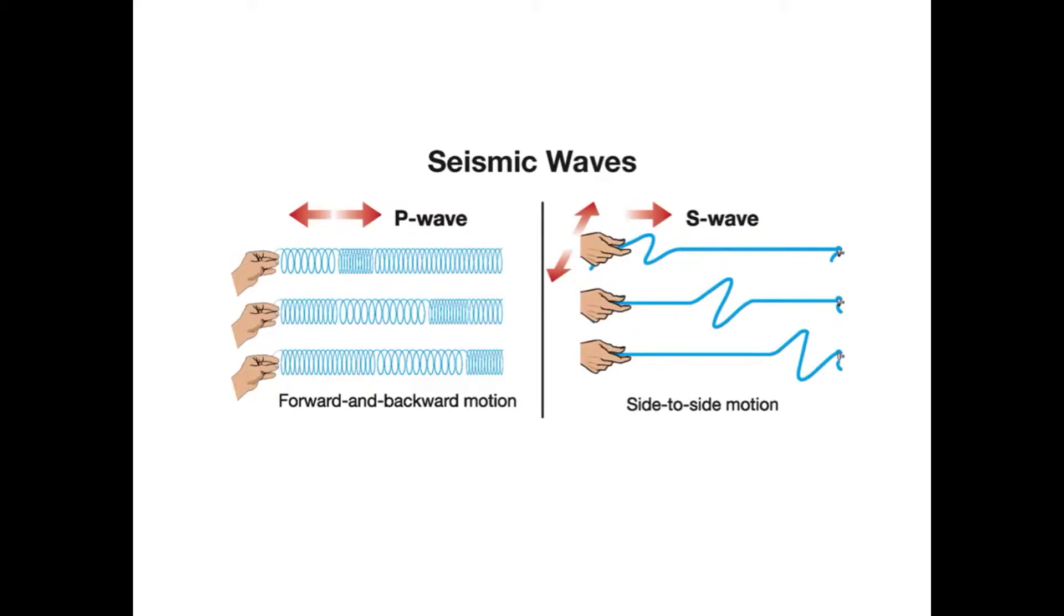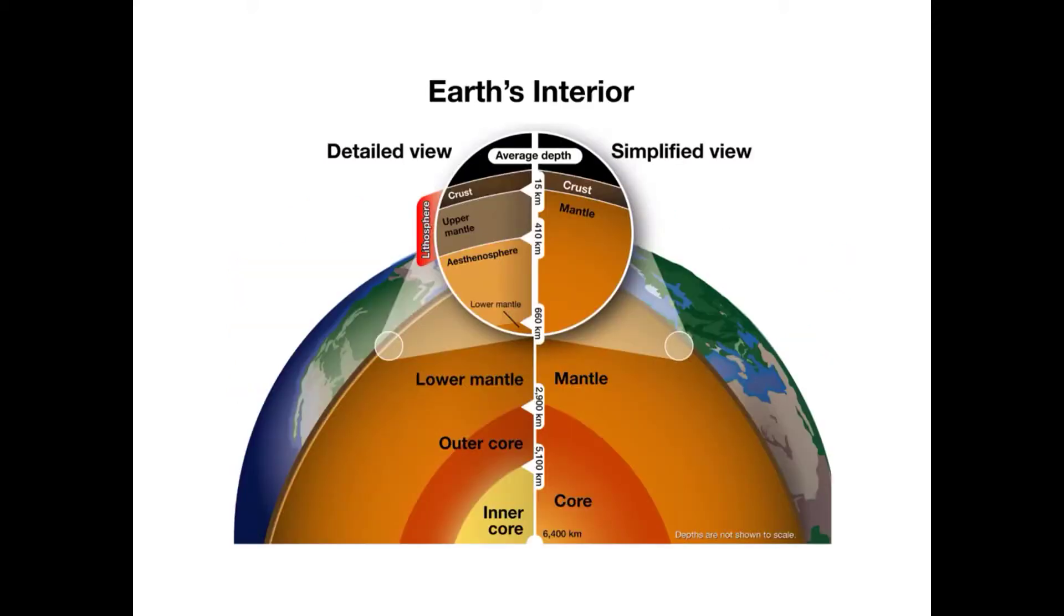S waves are slower, with the wave moving in a side-to-side motion and arriving later. With information from seismic wave readings, scientists are able to determine the distance from the crust to the center of the core.